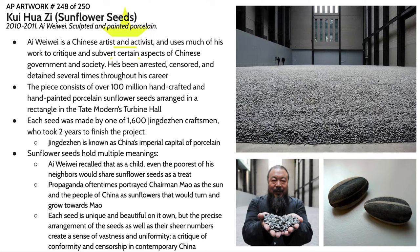There's also a lot of propaganda from the era of the mid-1900s that perpetuates the narrative of Chairman Mao as the sun and the people of China as sunflowers turning and growing towards him. Sunflowers, as their name suggests, will grow towards the sun, so that imagery is used in some propaganda.